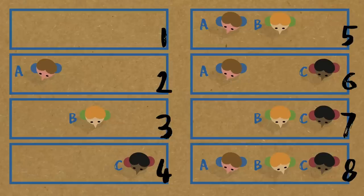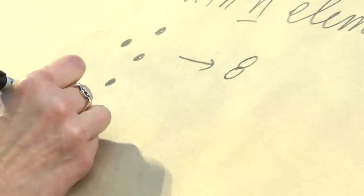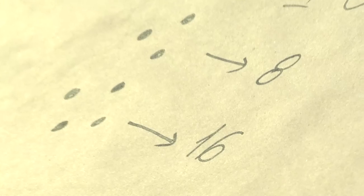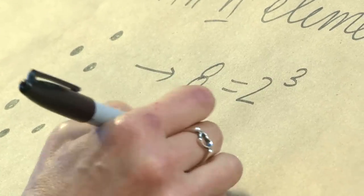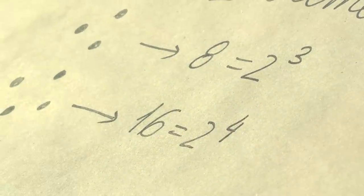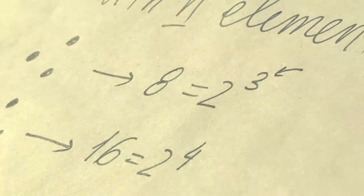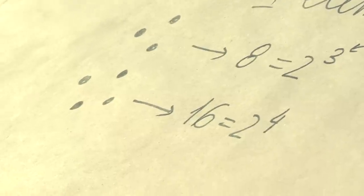If you have three people, how many groups can you extract from them? You can fiddle around and maybe you will come up with the answer eight. That seems like a lot but actually that's the case and we will show it. And then you try with perhaps four people and you count, count, count and you come up with 16. And of course you start seeing a pattern.